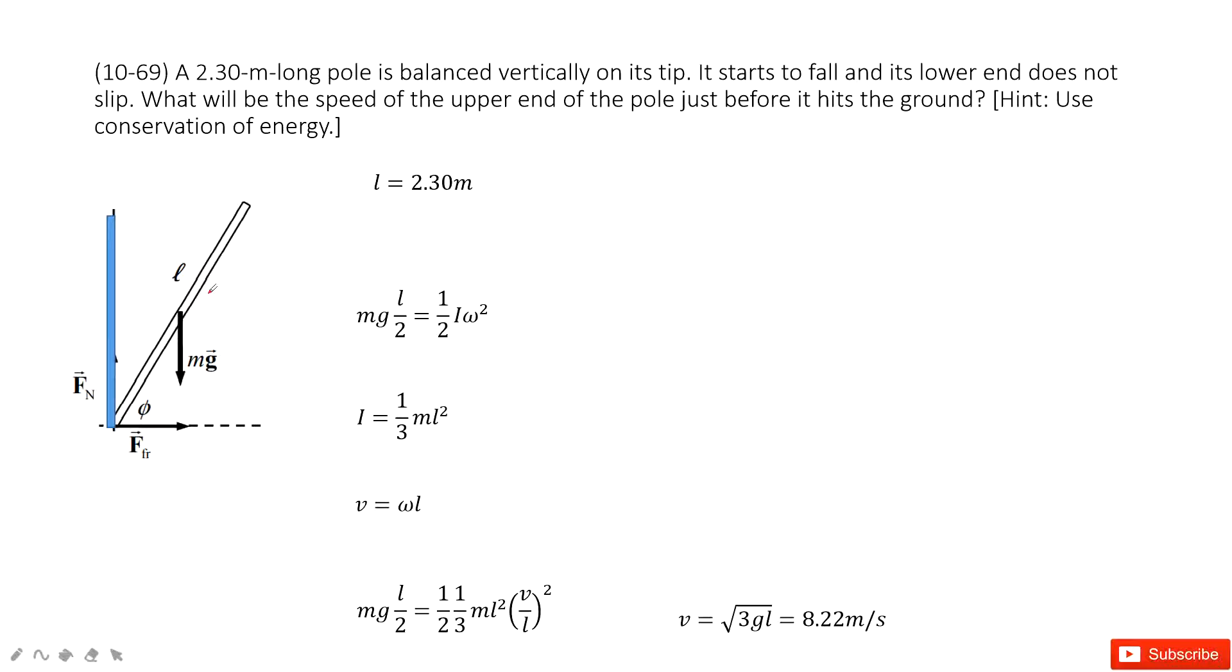And then it falls down. We need to find the speed of the upper end of this pole just before it hits the ground. So we need to find the velocity for this end.